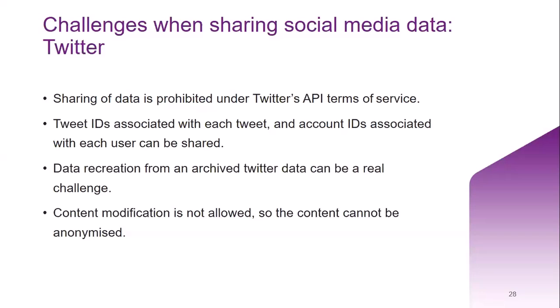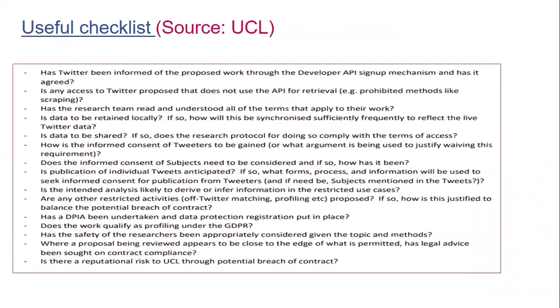The archiving of dataset identifiers is more effective if the processes used to create them are also documented. Twitter places particular restrictions on the form in which tweets may be published, requiring certain items of data to be retained in the published form. This may pose a challenge to privacy — for example, if you need to quote tweets when publishing, you cannot anonymize them because Twitter does not allow modification of the content. These are some of the challenges when you use social media data. A useful checklist by UCL for researchers who wish to use social media data has been added via a link in the slides.